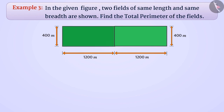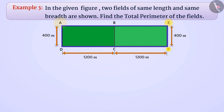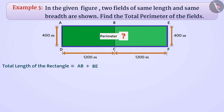Let's name these rectangles: rectangle ABCD and rectangle BEFC. By joining these two rectangles, we obtain a larger rectangle AEFD. We have to find the perimeter of this rectangle, so we first find the total length. The total length will be AB plus BE, which is 1200 meter plus 1200 meter, equal to 2400 meter.